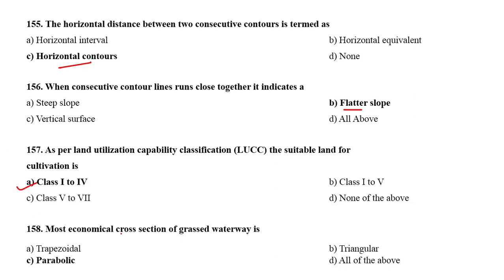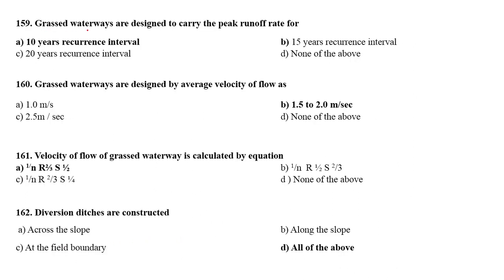Most economical cross-section of grassed waterways is the parabolic section. Grassed waterways are designed to carry the peak runoff at the rate of 10 years recurrence interval. The grassed waterways are designed by average velocity of flow as 1.5 to 2.0 meter per second.